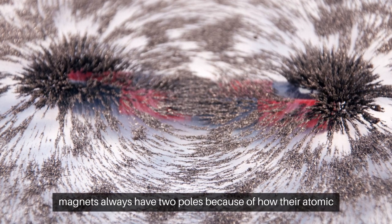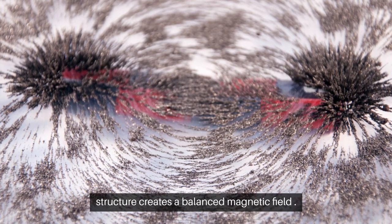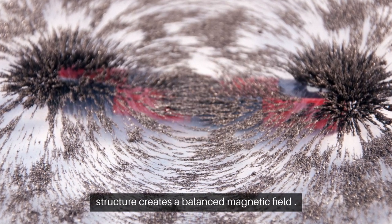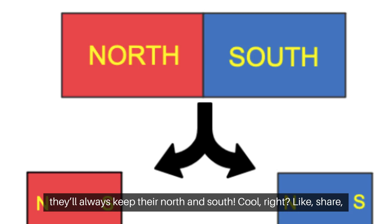So, magnets always have two poles because of how their atomic structure creates a balanced magnetic field. No matter how much you break them, they'll always keep their north and south.